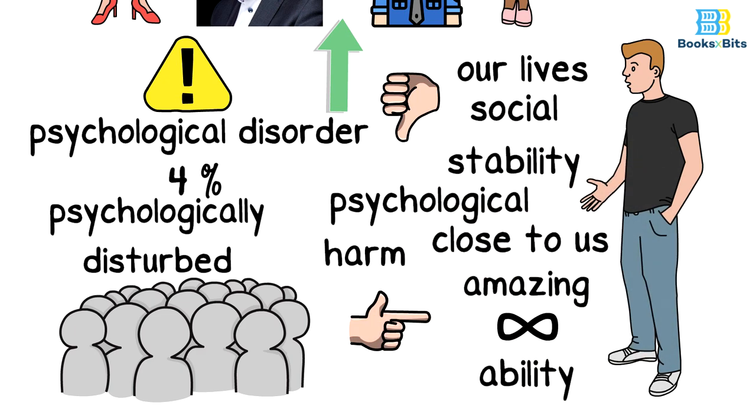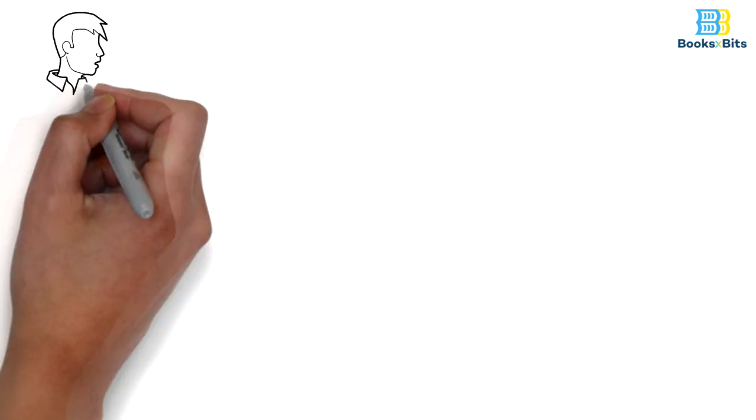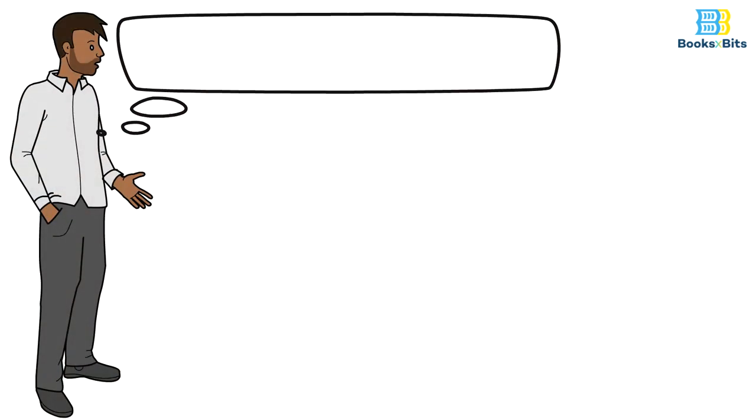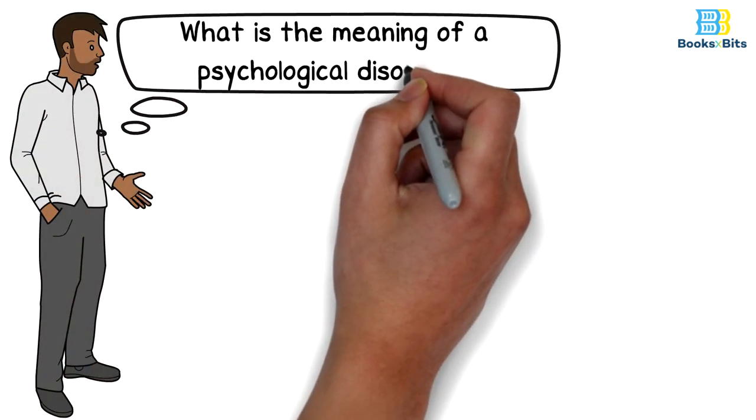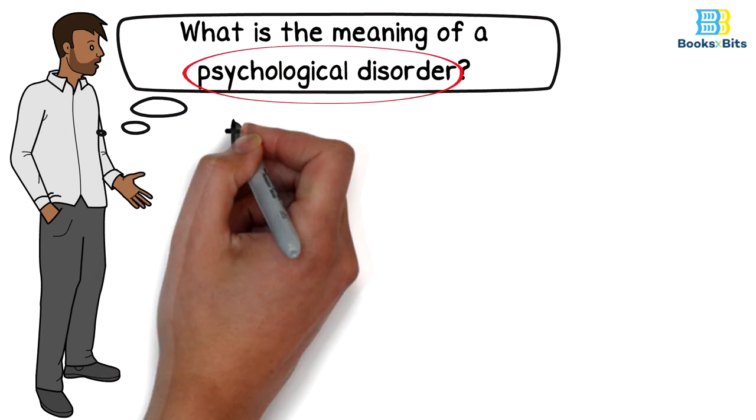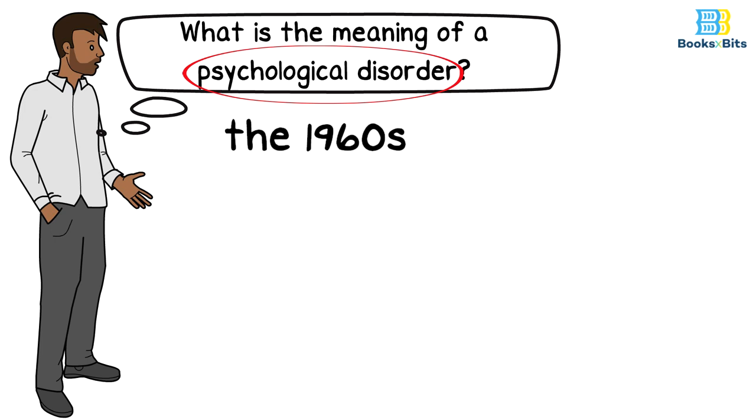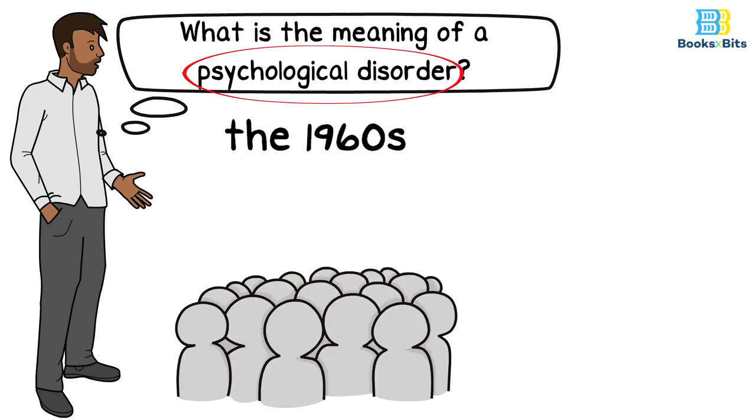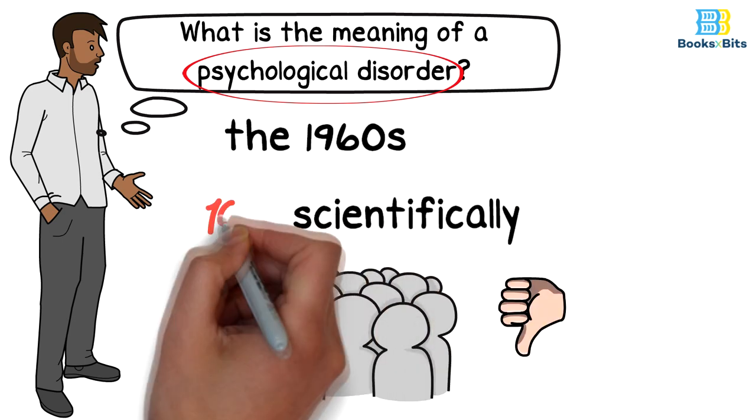After presenting this example that shows how a psychopath can harm you, we can ask the following question: what is the meaning of a psychological disorder? The term psychological disorder was used for the first time in the 1960s. Oddly enough, many people simply use it to describe some people that they don't like, even though the term is scientifically accurate.